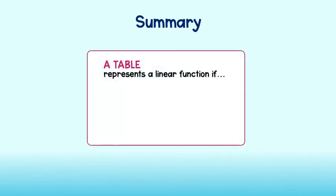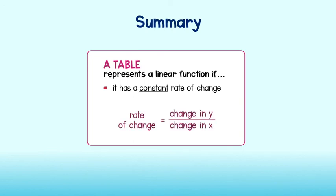In summary, we can confidently say that a table represents a linear function if it has a constant rate of change, which we can find by calculating the change in y over the change in x for each pair of values in the table. Good job!